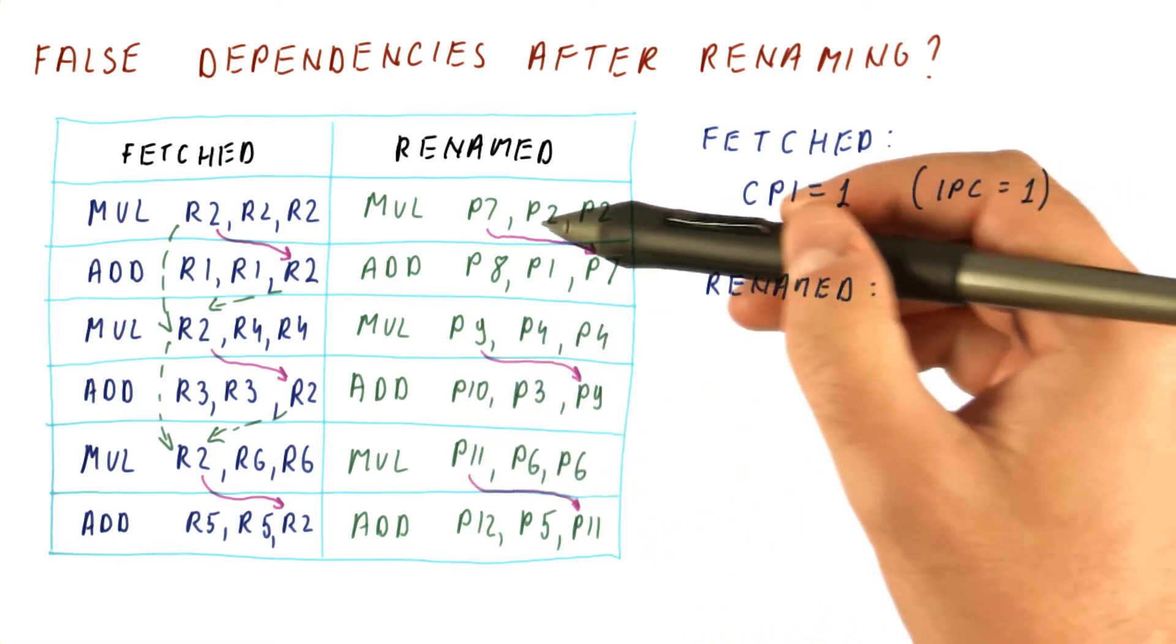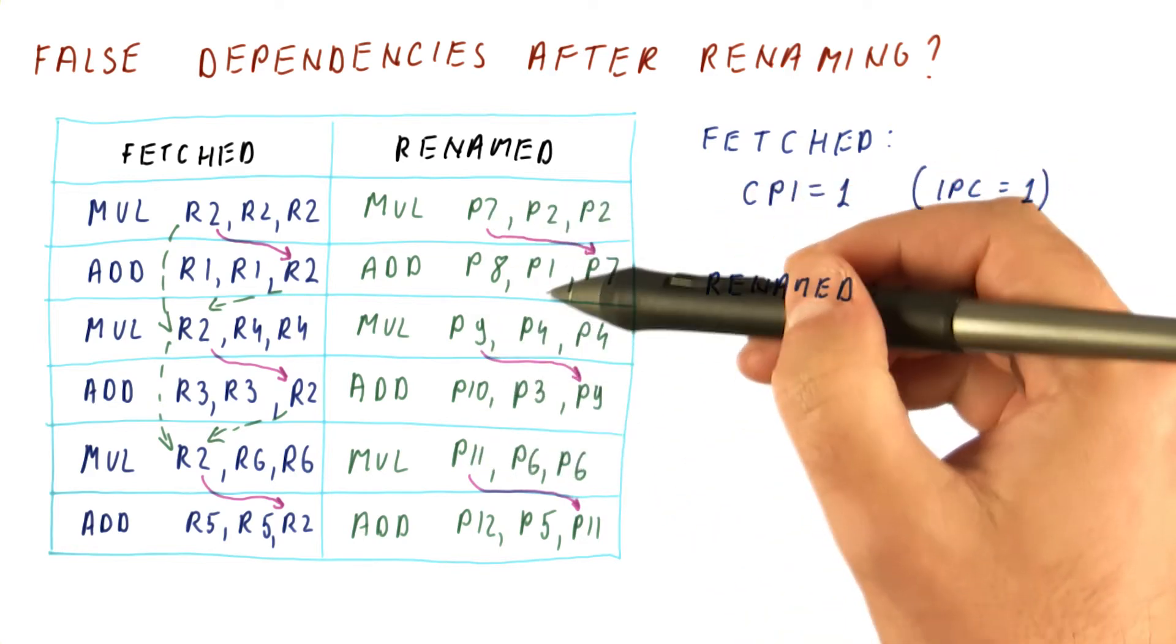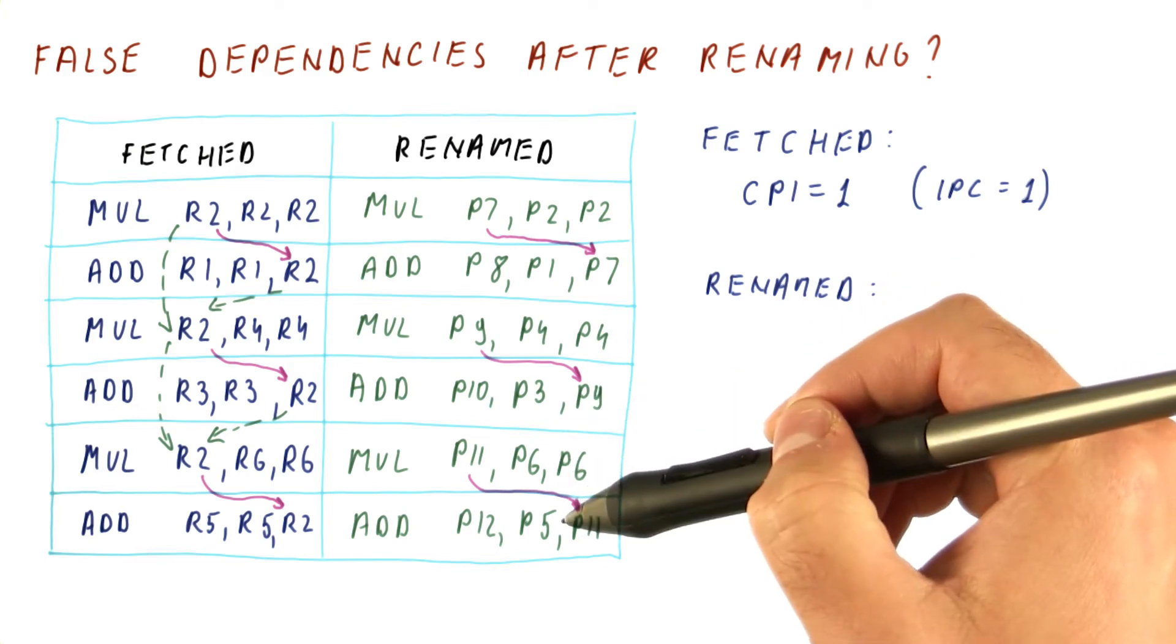So really, here, we can execute these three instructions in the first cycle, and these three instructions in the second cycle.